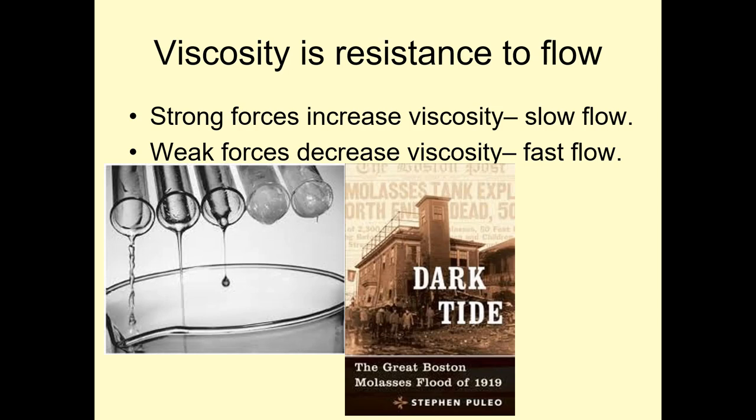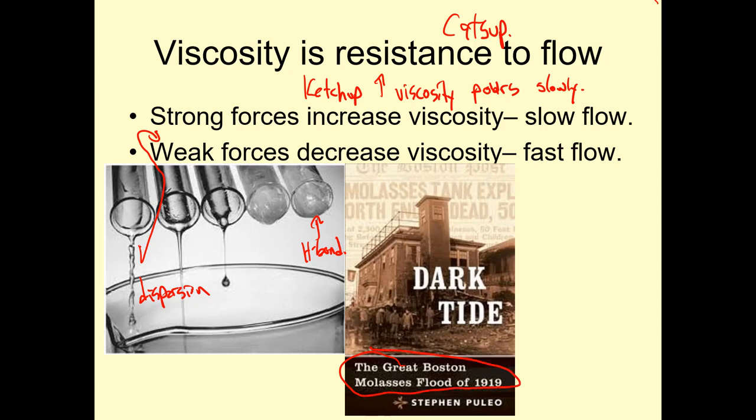Viscosity is resistance to flow. So for example, ketchup has a high viscosity. It pours slowly. And if you prefer to call it catsup, you can do that too. Strong forces increase viscosity. So it would have a slow flow. So ketchup has a high viscosity and it pours slowly. Weak forces decrease viscosity. It has a fast flow. So this right here, do you see how this is the biggest flow? Weak forces. So I would say this is probably dispersion. And this one right here that isn't flowing much at all is probably H bond. There really was a molasses flood of 1919.